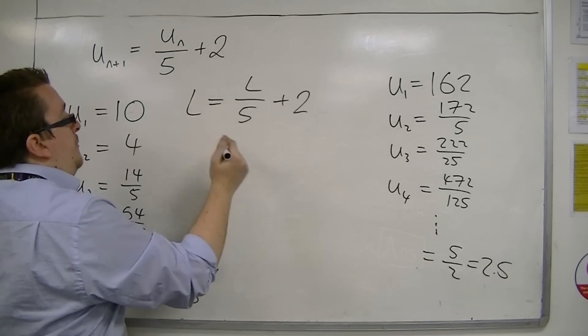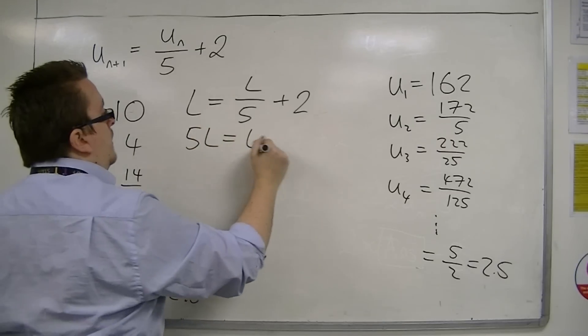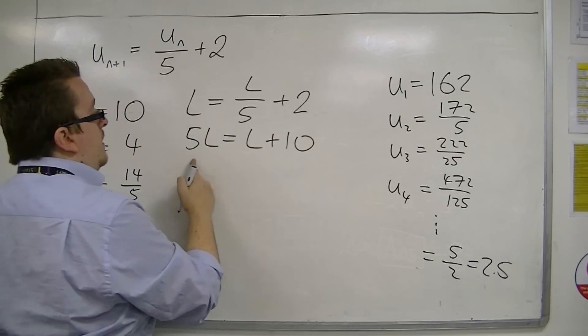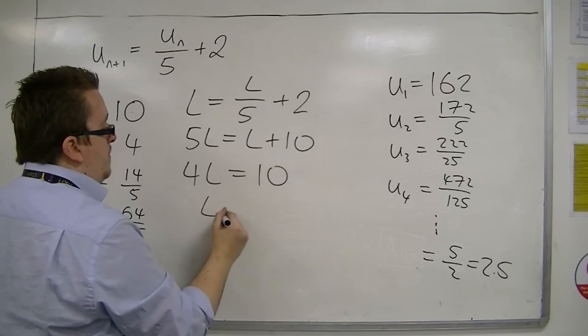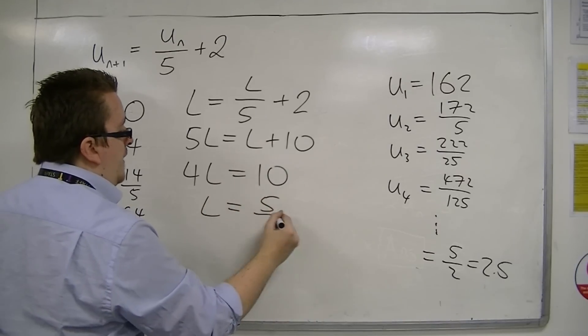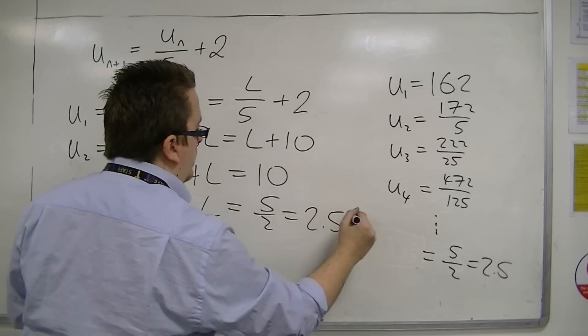I multiply both sides by 5, take L from both sides, divide both sides by 4, and I get 5 halves, 2.5.